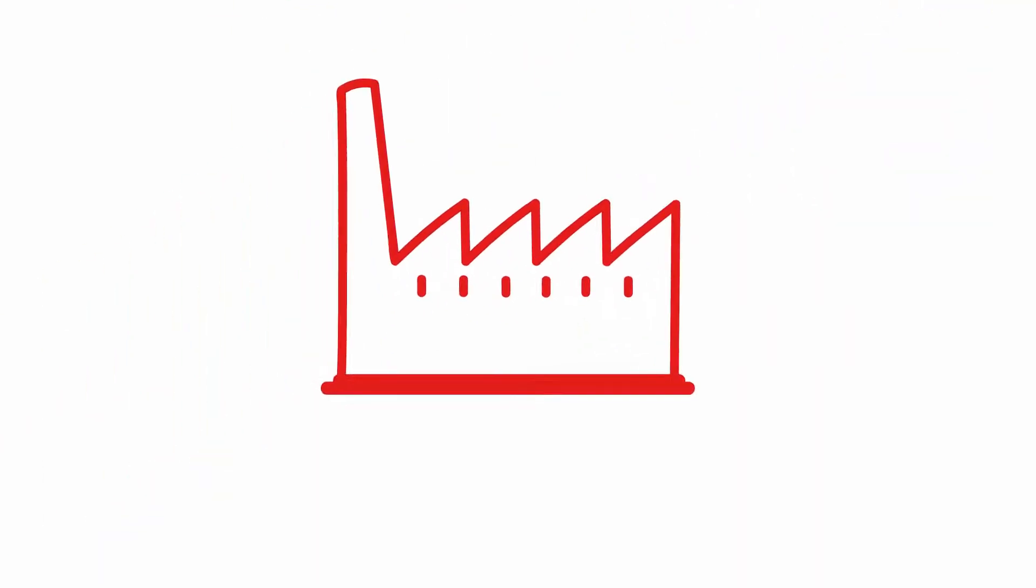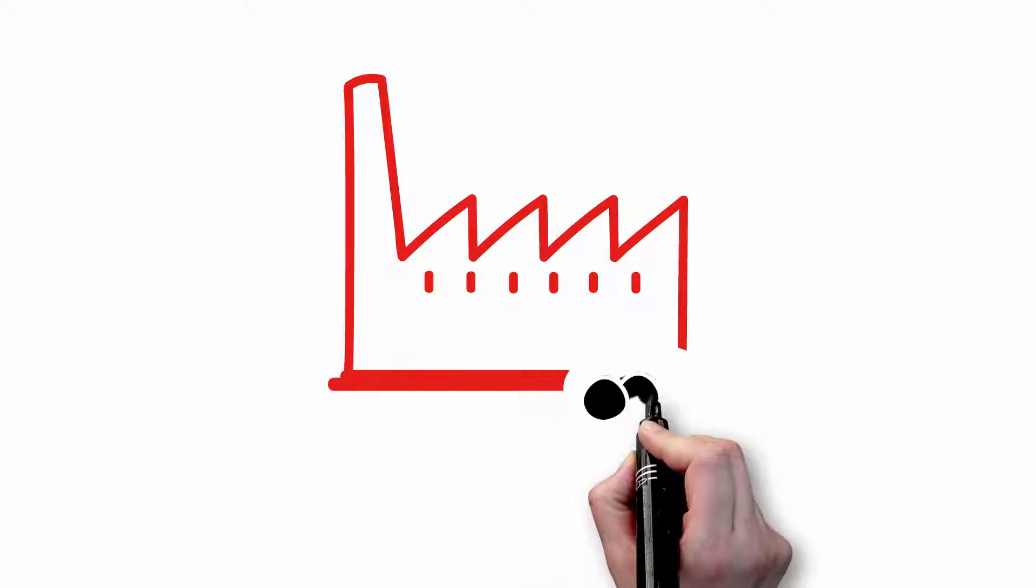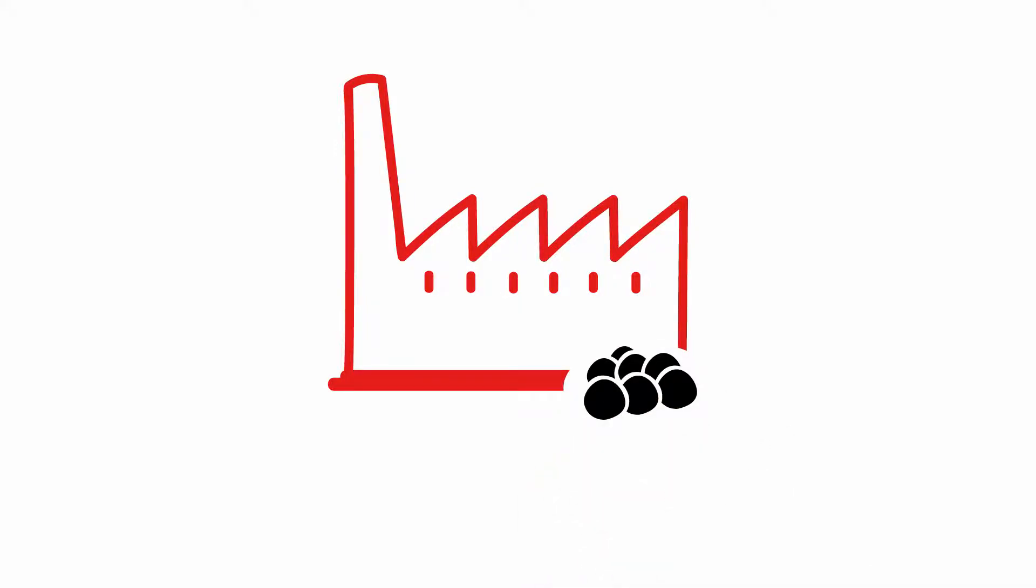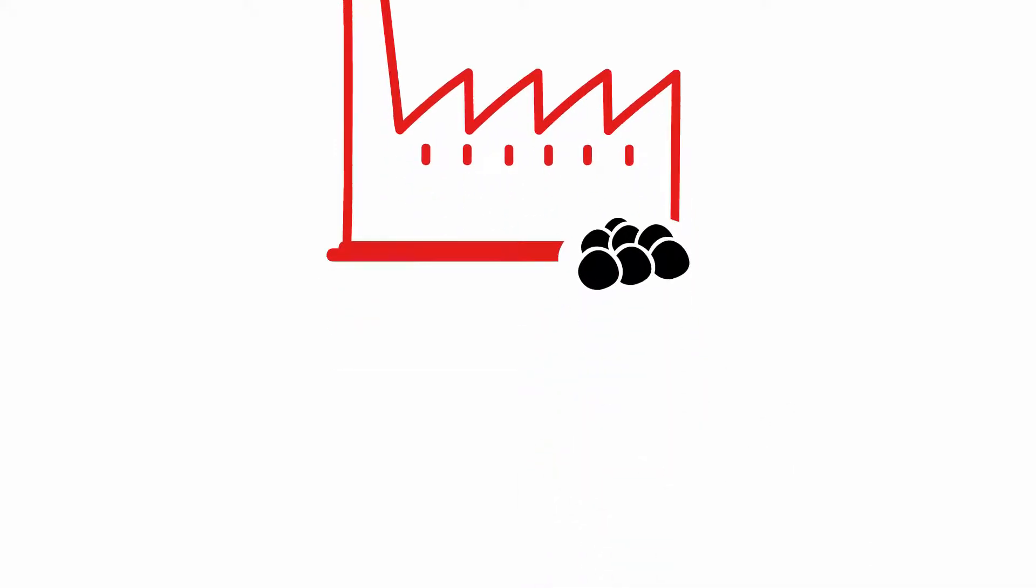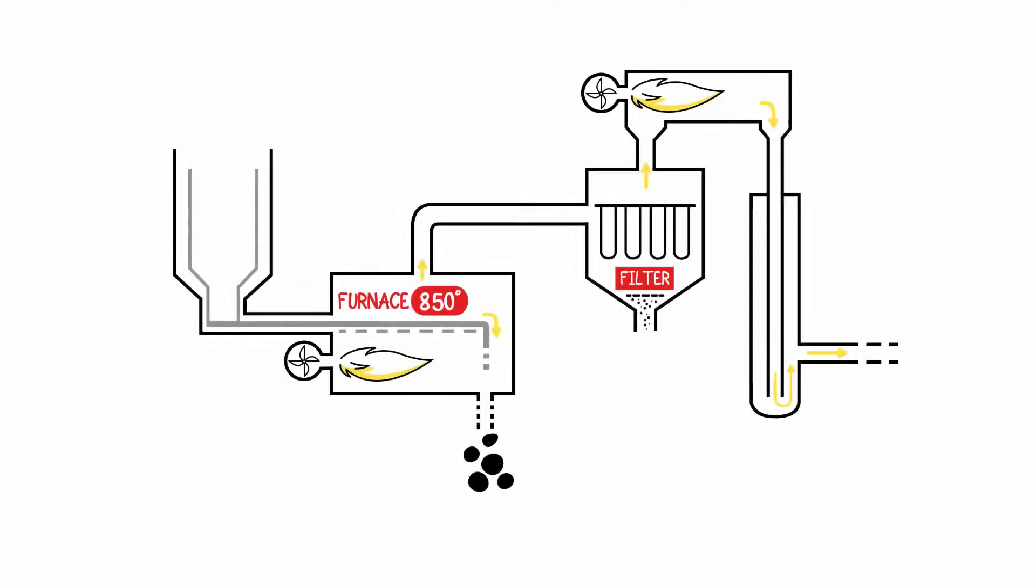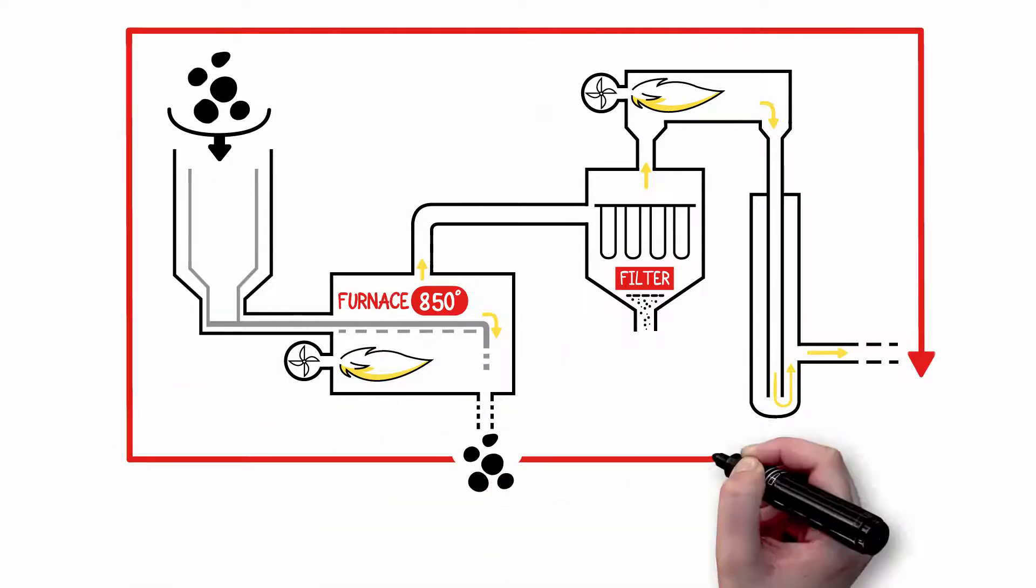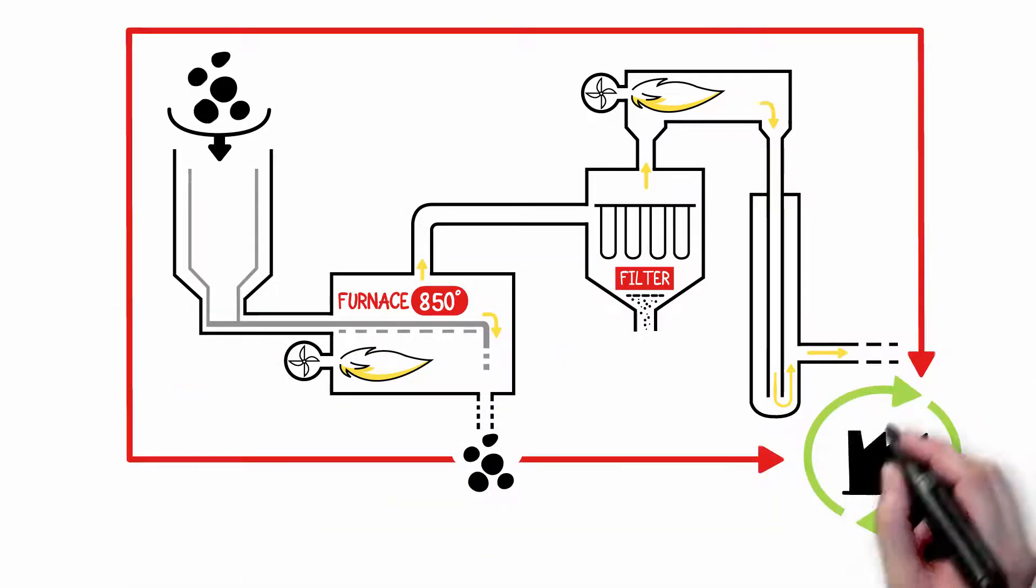The spent mercury absorbents treatment unit uses the same process as the one before. The mercury that is present in the absorbents is thermally desorbed. The recovered absorbents are then sent to a copper smelter to be processed for recovery.